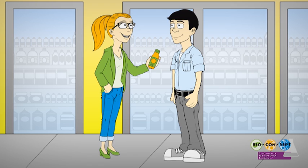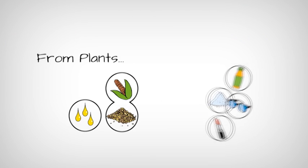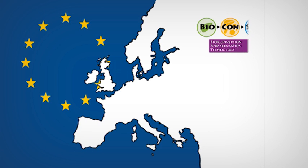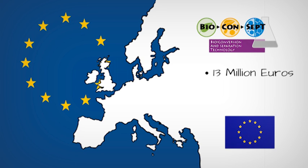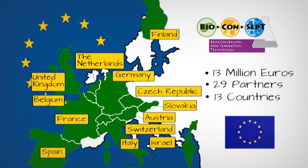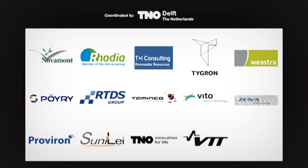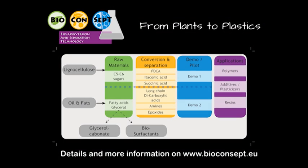Soon Emma and Ben can buy plastic bottles, sunglasses, and other products made from second-generation biomass. BioConcept: from plants to plastics — developing a sustainable way to convert second-generation biomass into valuable chemicals for bioplastic production. The BioConcept project is a 13-million-euro collaborative project funded under the European Commission's Seventh Framework Programme. 29 partners from 13 European countries are represented, including research and technology institutes, SMEs, and large industrial companies. The project is coordinated by TNO Delft, the Netherlands.